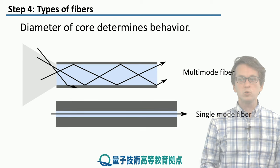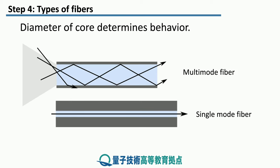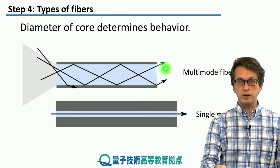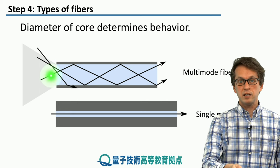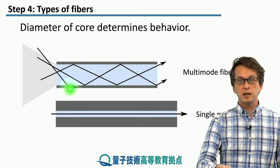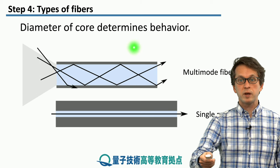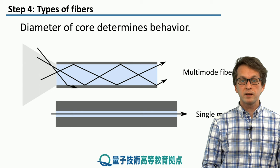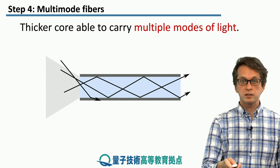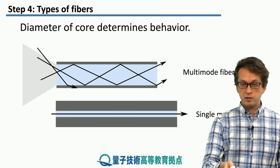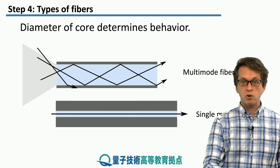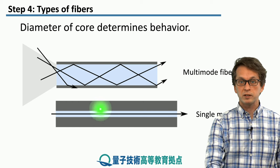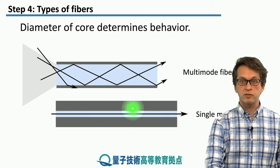There are two main types of fibers. One is the multi-mode fiber — you can see that the modes are represented by different spatial beams bouncing inside the fiber. And single-mode fibers, which are so narrow that there's only one mode permitted to travel inside the fiber.